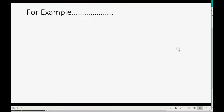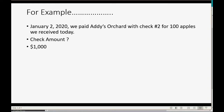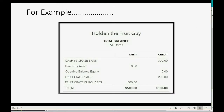For example, let's imagine on January 2nd of 2020, we paid Addy's Orchard with check number two to buy 100 apples that we receive today. Can you guess the check amount? If you remember that we buy them for $10 each because that's how we set it up in the items list in the previous video, then $10 each and we buy 100 means we're paying Addy $1,000 to buy inventory.